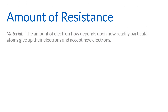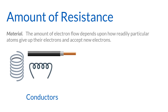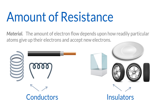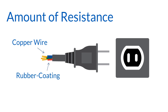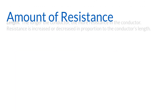Material: The amount of electron flow depends upon how readily particular atoms give up their electrons and accept new electrons. Materials that permit this are called conductors. Copper, silver, and aluminum are considered good conductors. Materials that don't readily give up electrons, which restricts the flow, are called insulators. Rubber, glass, and porcelain are considered good insulators. Conductors and insulators perform a very important team function. An electrical cord to a lamp, for example, has a copper wire conductor on the inside with a rubber coating insulator around the outside. Free electrons flow along the copper wire to light the lamp, while the rubber coating keeps the free electrons inside to prevent shock and other problems.